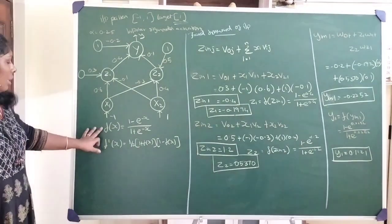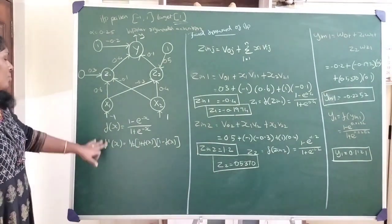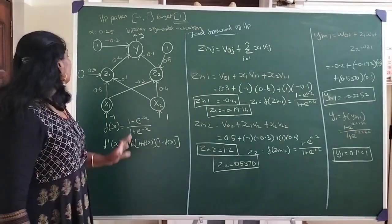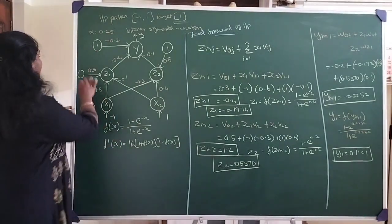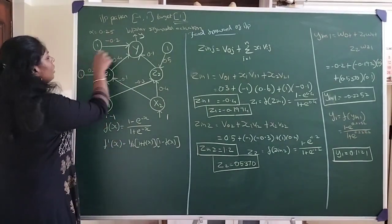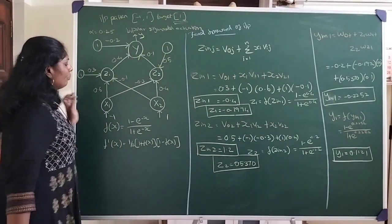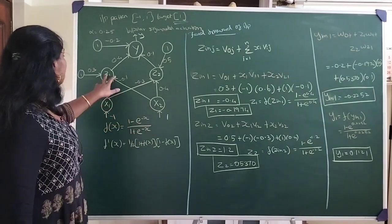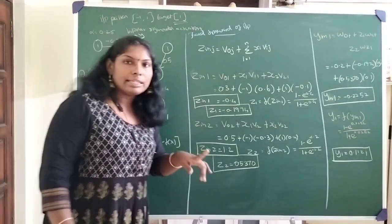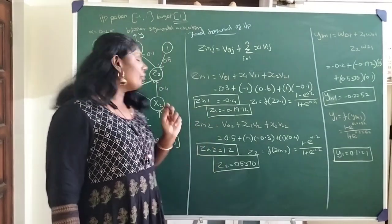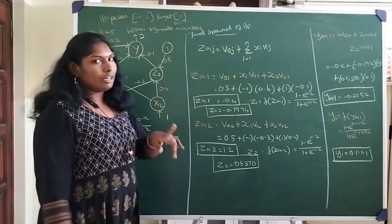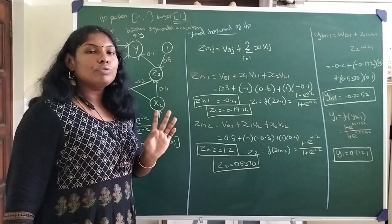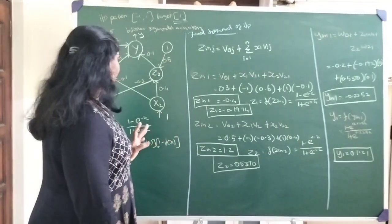This example uses a bipolar activation function. Here is the formula for the activation function and its inverse for bipolar signal activation. We have the bias values, two input neurons, one hidden layer with two neurons, and finally one output neuron.